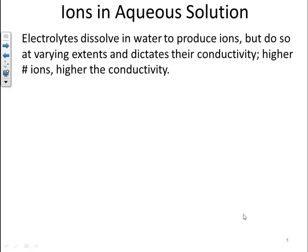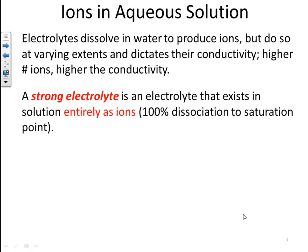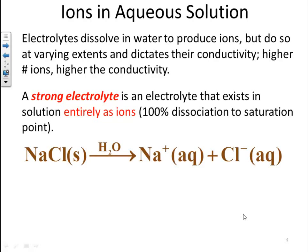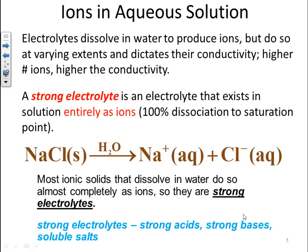Electrolytes dissolved in water produce ions, but do so at varying extents, which dictates the conductivity. The higher the number of ions, the higher the conductivity. A strong electrolyte is one that exists in solution entirely as ions — basically 100% dissociation up to its saturation point. Sodium chloride, which is a soluble salt and a strong electrolyte, breaks up 100% into sodium and chloride ions until it reaches its saturation point. Most ionic solids that dissolve in water do so almost completely as ions, so they are strong electrolytes. Strong electrolytes are typically your strong acids, your strong bases, and your soluble salts.